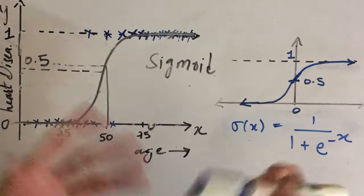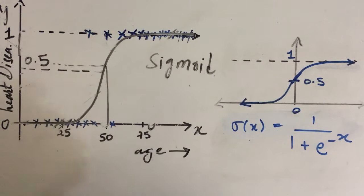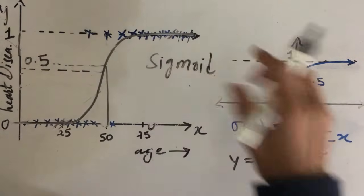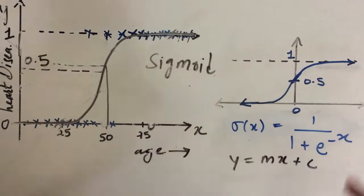Now what we can do is we can take the traditional straight line that we draw with this formula y equal to mx plus c, the straight line that we draw before, and apply this straight line a sigmoid curve.